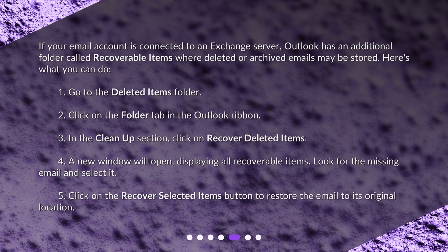3. In the Cleanup section, click on Recover Deleted Items. 4. A new window will open, displaying all recoverable items. Look for the missing email and select it. 5. Click on the Recover Selected Items button to restore the email to its original location.